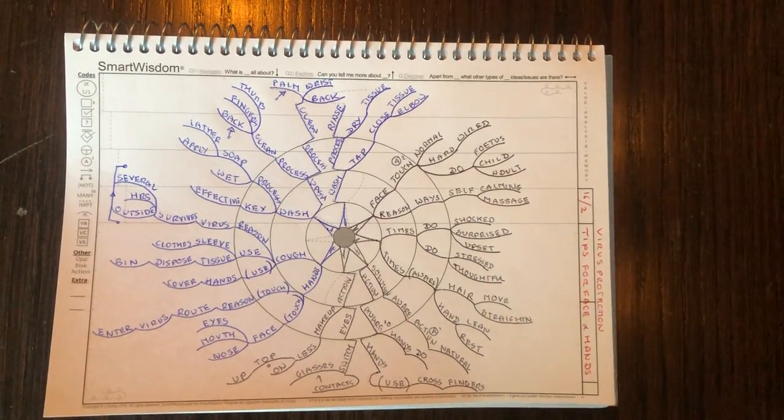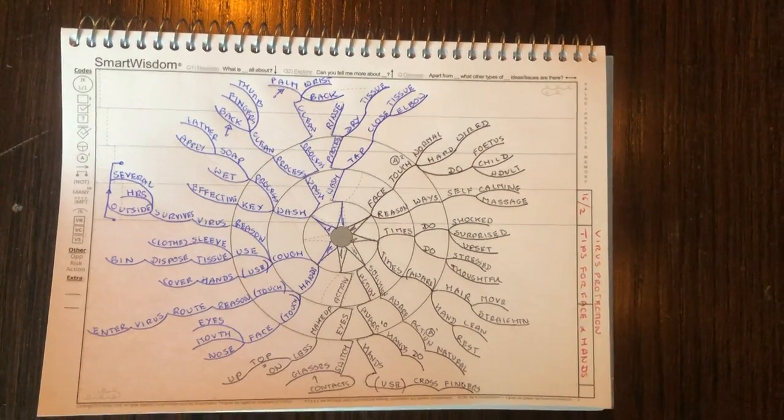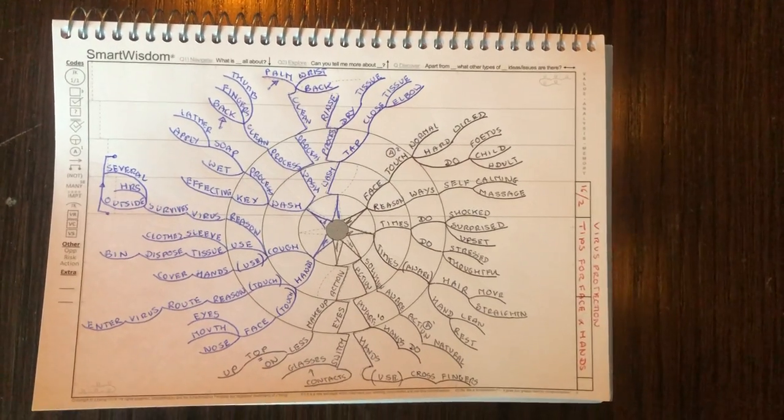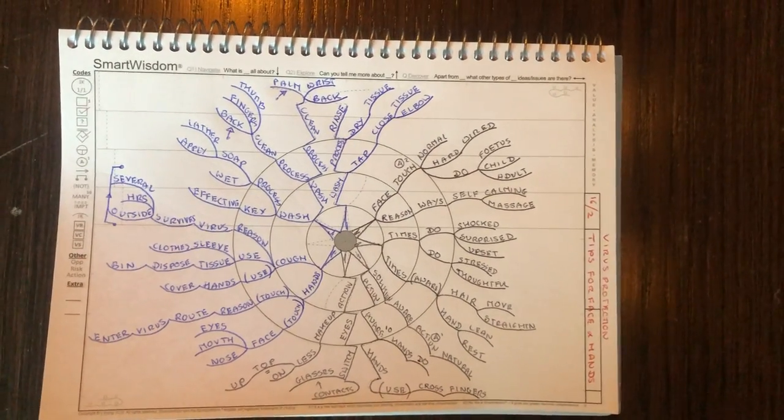Hello, my name is Jonathan Kemp and I'm the creator of Smart Wisdom. I've been helping people manage information more effectively for the last twenty years.